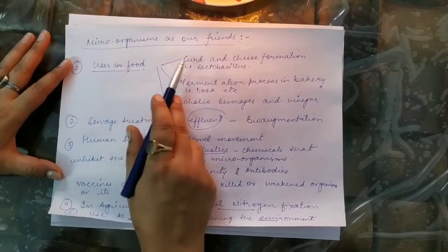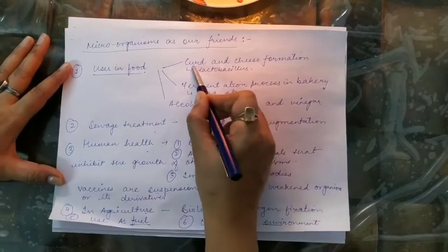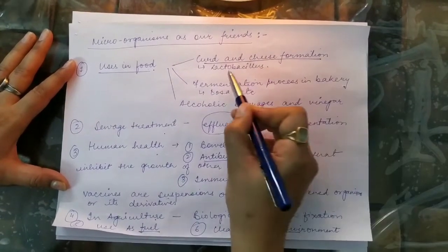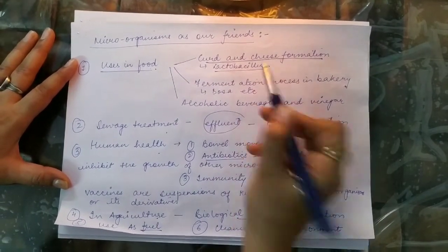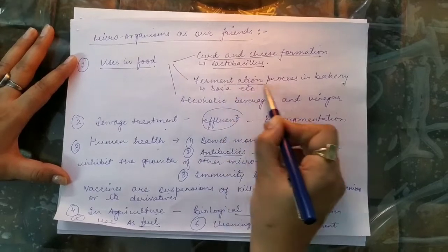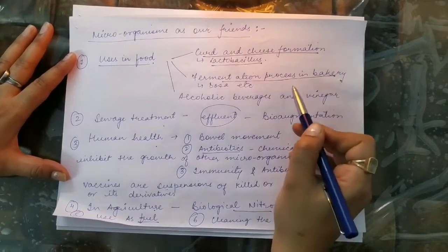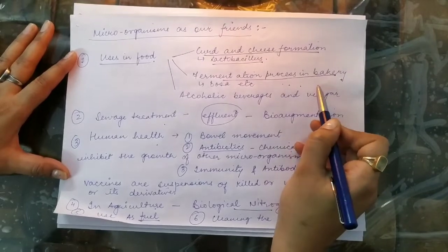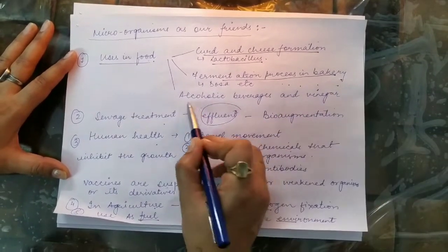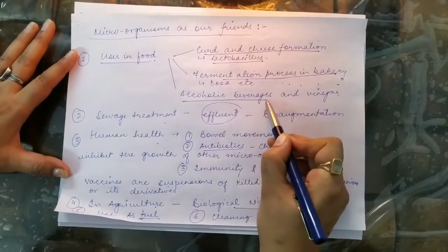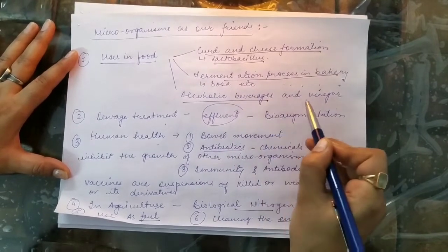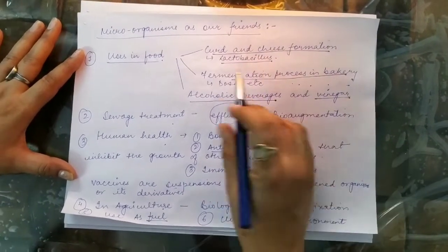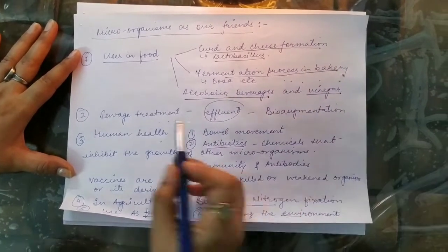In food, microorganisms are used in curd and cheese formation. For making curd at home, we use a bacteria called Lactobacillus. They are used in the fermentation process in bakery products — making idlis, dosas, breads, pastries, and biscuits. They are also used in making alcoholic beverages and in vinegar industries.